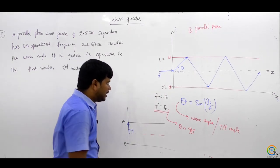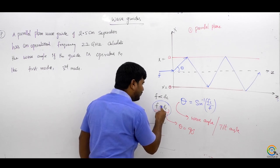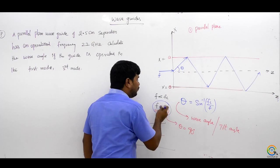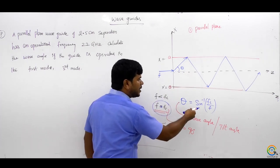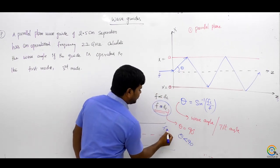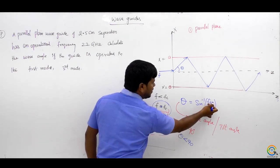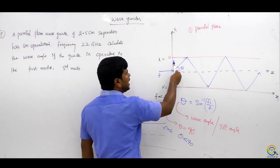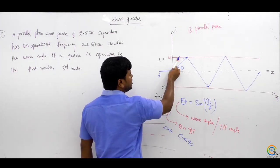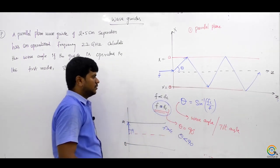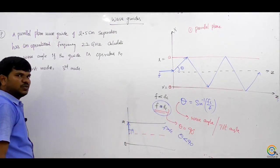If f is greater than fc, theta will be less than 90 degrees. When fc/f is less than 1, you automatically get a value less than 90 degrees for theta, and the wave will move forward. That is the concept: for propagation, f must be greater than fc.